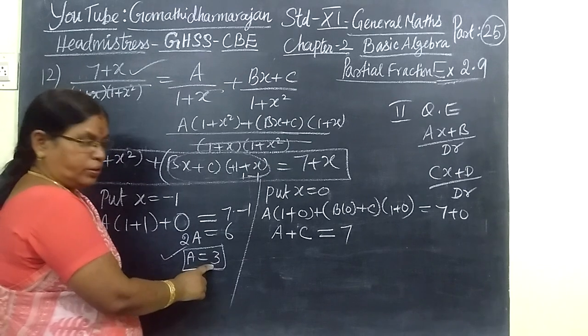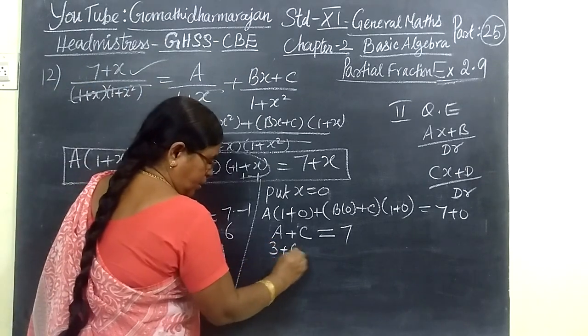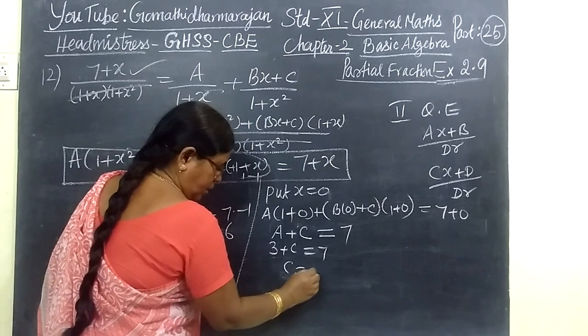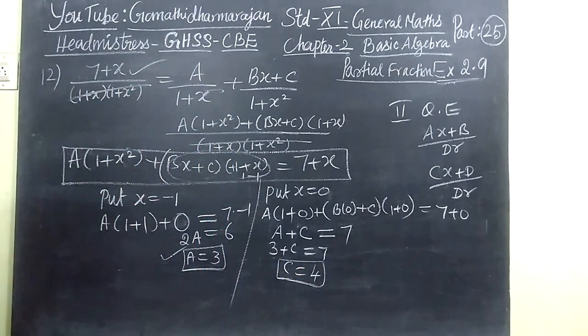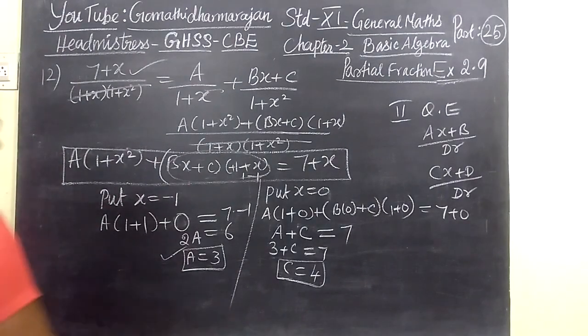So A is 3, so 3 plus C equal to 7, which implies C equal to 7 minus 3, which is 4. So that also we check the answer. Here C equal to 4, so that is correct one.